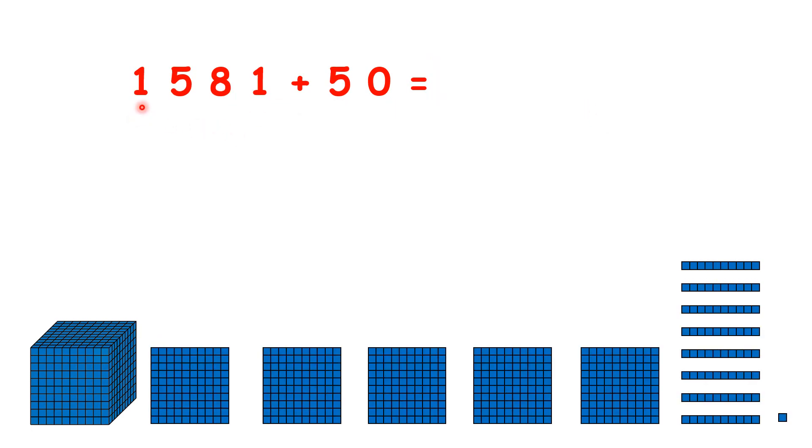What is 1,581 plus 50? So we have 8 tens, and we need to add 5 tens. That would give us 13, a two-digit number. So instead, let's think of us as having 58 tens and adding 5. And let's see why we need to do this.